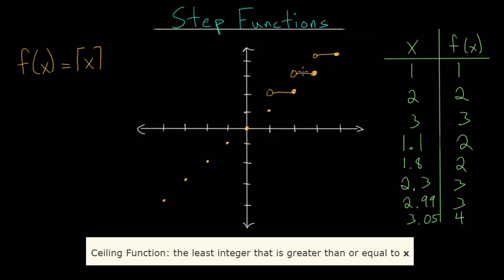This looks just like the floor function but shifted up one unit. Between zero and one, not including zero, the Y value is one. Between negative one and zero, not including negative one, the Y value is zero. So whatever value you plug in, the ceiling function rounds it up to the nearest integer, unless you plug in an integer, in which case it equals that integer. The full graph is a bunch of steps — essentially an infinite step function.